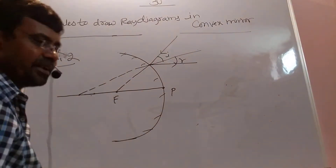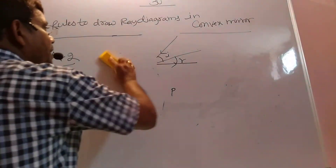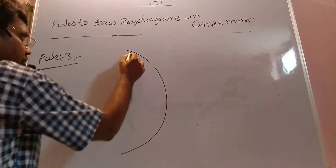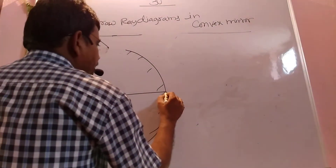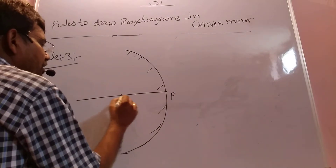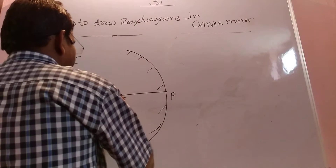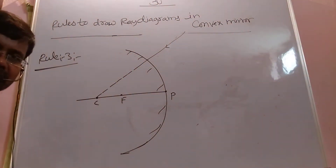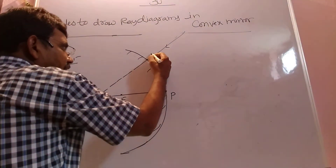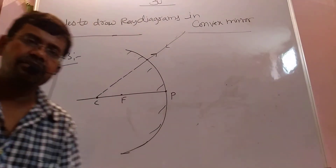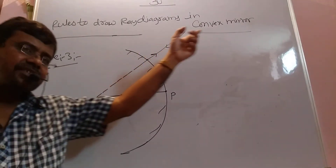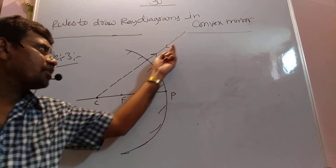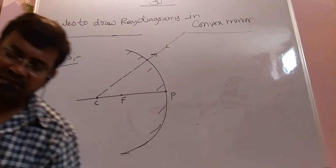Now we are discussing Rule 3 in the convex mirror. This is the pole, this is the focus, and this is the center of curvature. This is the normal. If any beam of light is coming along the normal — travelling along the normal direction — after reflection it retraces its path. Any beam of light travelling along the normal, after reflection, retraces its path. That is Rule 3.